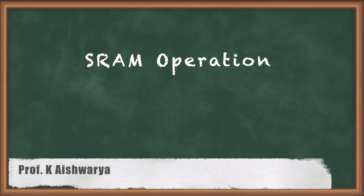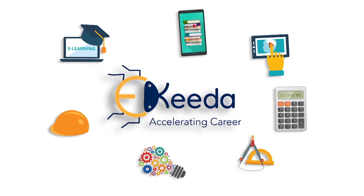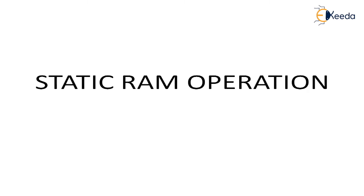In this video we are going to learn about static random access memory (SRAM) operation. In the previous video we saw about ROM array — read-only memory — and we saw two types of arrays: NAND-based array and NOR-based array using a 4x4 cell. Now we are moving to another type of memory, which is static RAM, otherwise called SRAM.